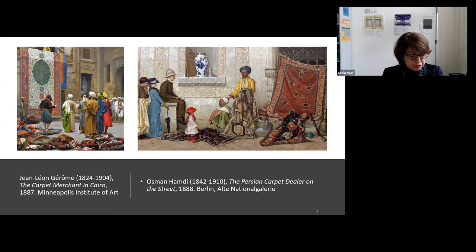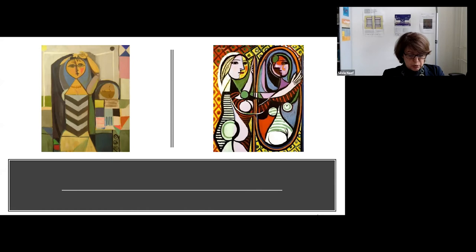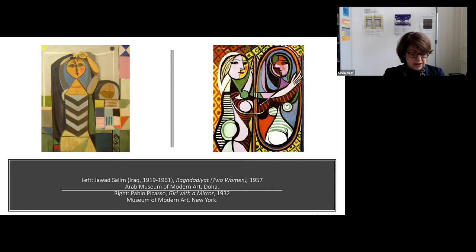Our second date will be 1957, and the chosen painting is Baghdadiyat or Two Women by the Iraqi Jawad Salim. If you look at his paintings, the parallels to Picasso's Girl with Mirror are obvious. Are we facing here what Partha Mitter in 2008 critically defined as the Picasso-Manqué syndrome? Again, this might be our first impression. However, if we go deeper into Iraq's artistic and intellectual history, we will see that Jawad Salim's work is much more than a Picasso-Manqué.